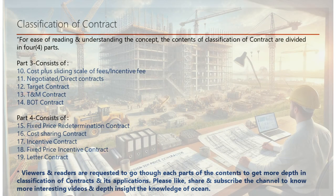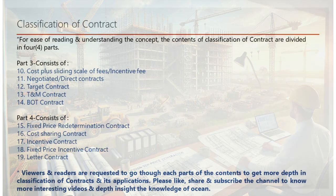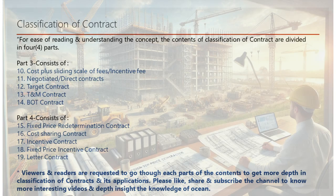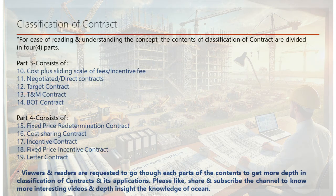Part three will cover: 10. Cost-plus sliding scale of fees incentive fee — where the fee varies based on the contractor's performance. 11. Negotiated direct contracts — established directly between owner and contractor without competitive bidding. 12. Target contract — a target cost with incentives or penalties based on performance. 13. T&M contract (time and materials) — compensated based on time and materials used, often with a markup. 14. BOT contract (build, operate, transfer) — the contractor builds, operates for a period, then transfers ownership to the client.